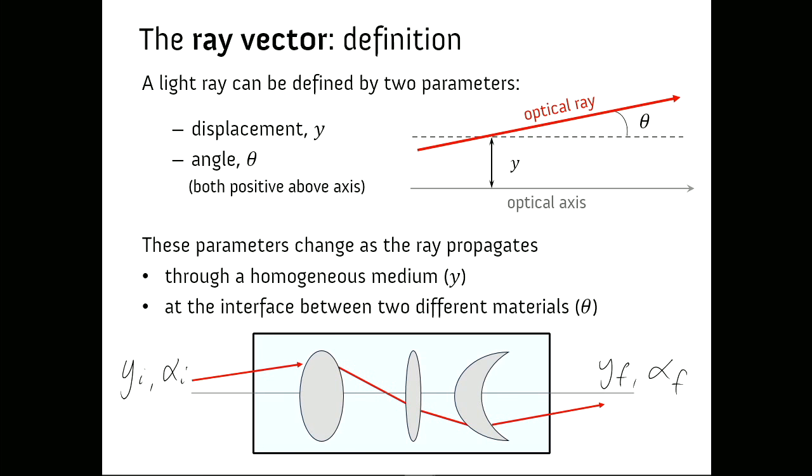And as you'd expect, these parameters of the ray, its height and its angle change as the ray propagates through some optical system. That optical system can be refraction through a boundary. It can be propagation through optical elements. Or that can be considered as the entire black box of stuff. And we want to know how the numbers, how the ray on the way out depends on the ray on the way in, defined by two numbers on the way out, the displacement and angle, and two numbers on the way in, the displacement and angle.